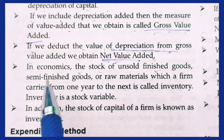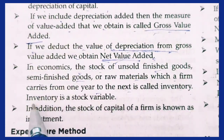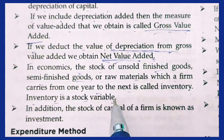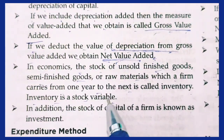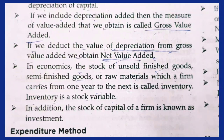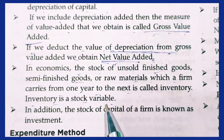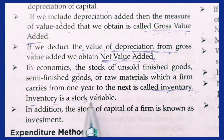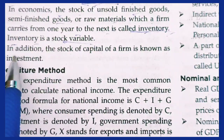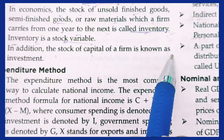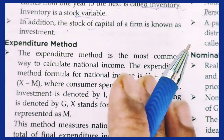In economics, the stock of unsold finished goods, semi-finished goods, or raw materials that a firm carries from one year to the next is called inventory. Inventory is a stock variable. In addition, the stock of capital of a firm is known as investment.